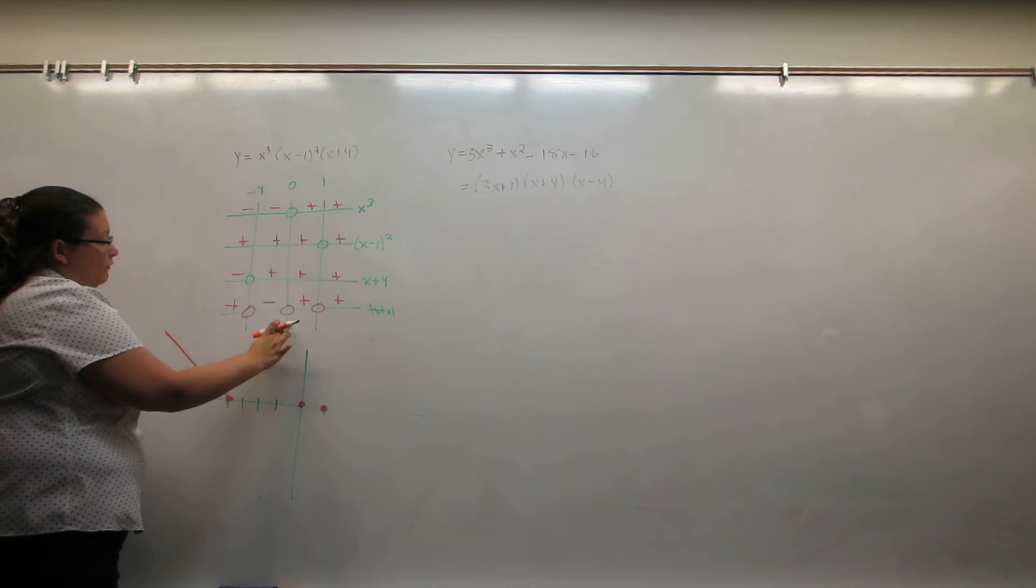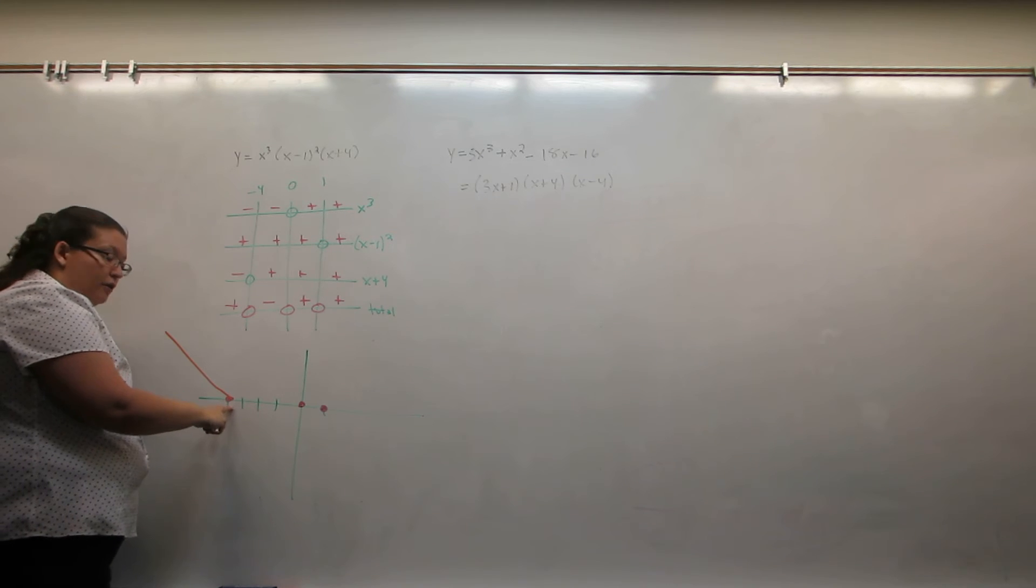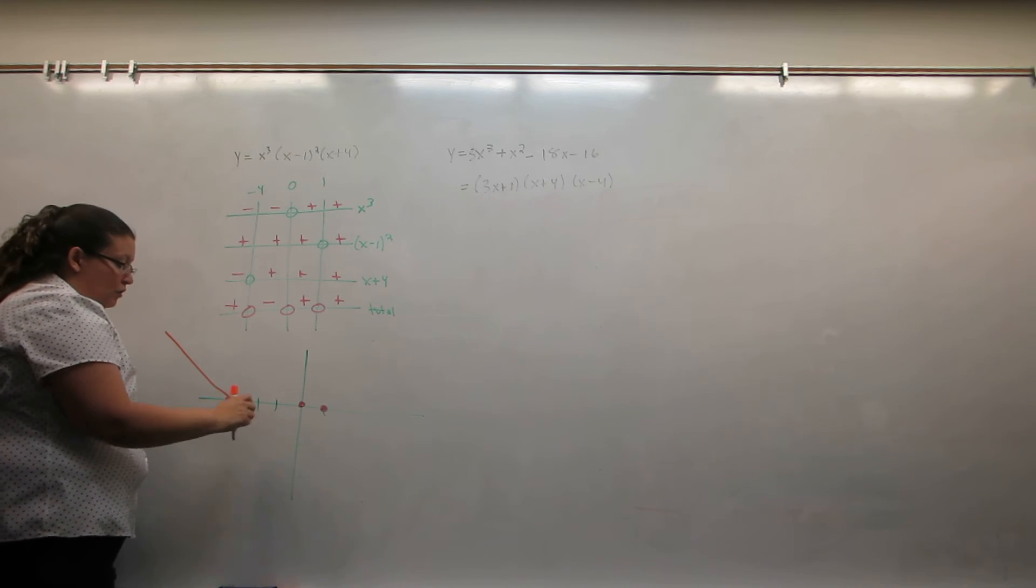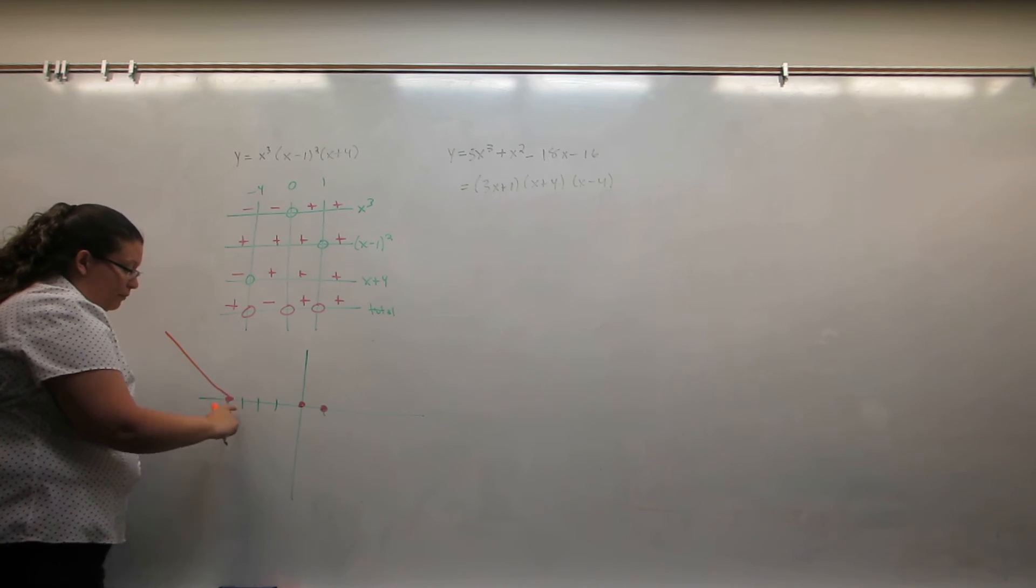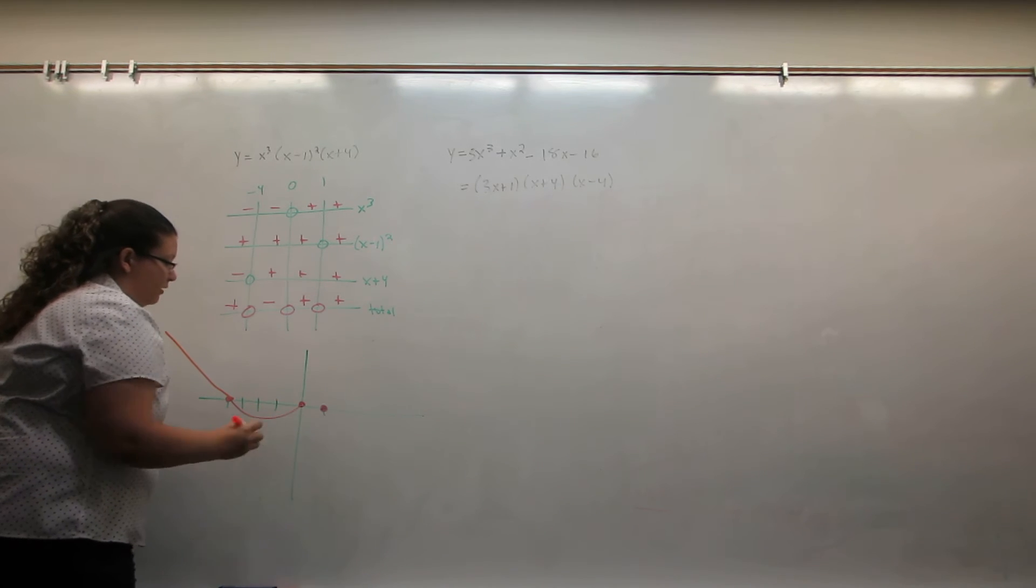Between negative four and zero, the sign chart tells us the graph is negative. I know it has to start here and it has to end here. So it's either going to be a hump up or a hump down. Which of those is negative? The hump down.